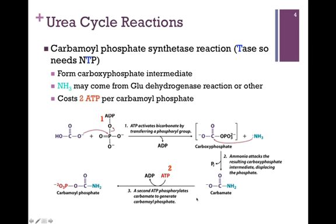In the next step, we phosphorylate carbamate to form carbamoyl phosphate, and that costs us our second molecule of ATP. So for every molecule of carbamoyl phosphate, it costs us two molecules of ATP.